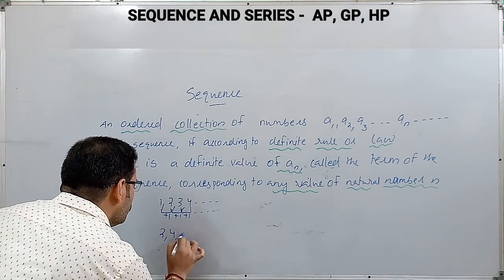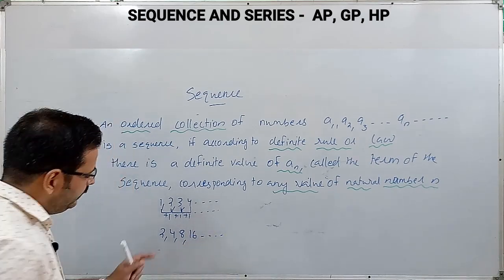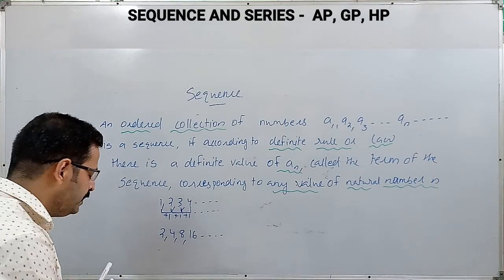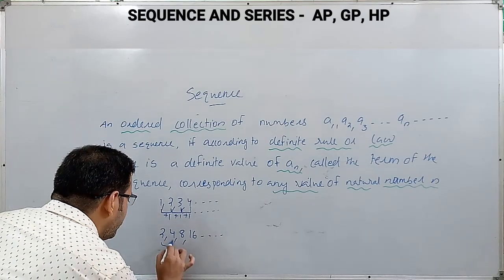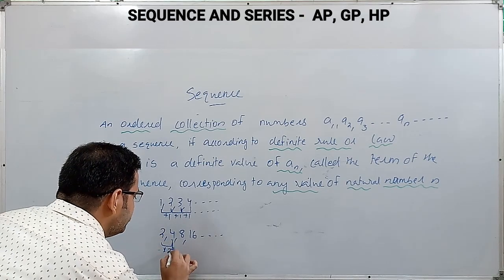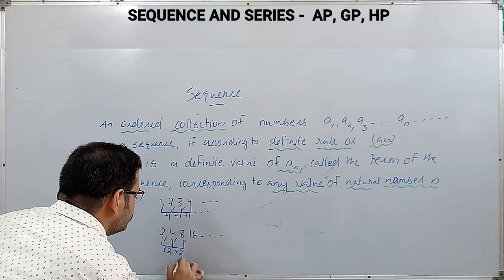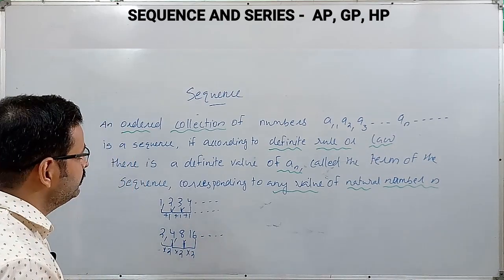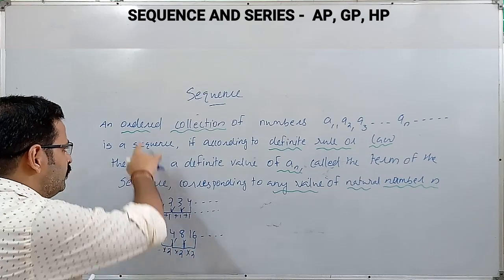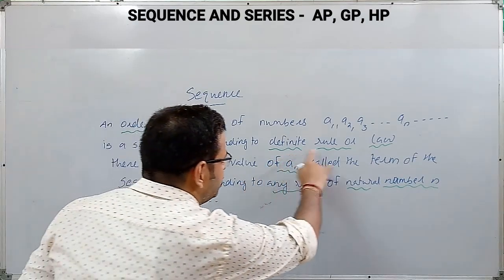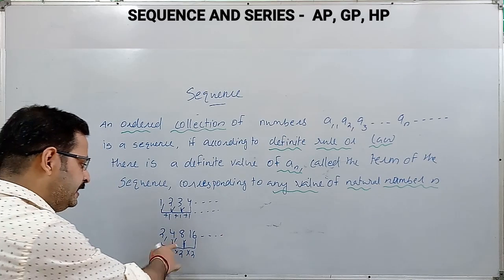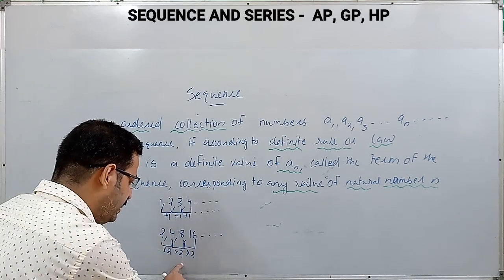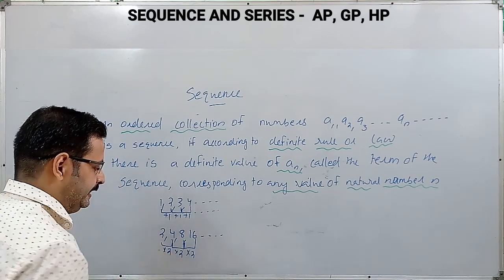Next example: 2, 4, 8, 16, etc. Is this a sequence or not? The second term is obtained by multiplying 2 with the first term, the third term by multiplying 2 with the second term, the fourth term by multiplying 2 with the third term. This collection is an ordered collection and follows a definite rule — each term is obtained by multiplying a constant 2 to the preceding term. So it is also a sequence.